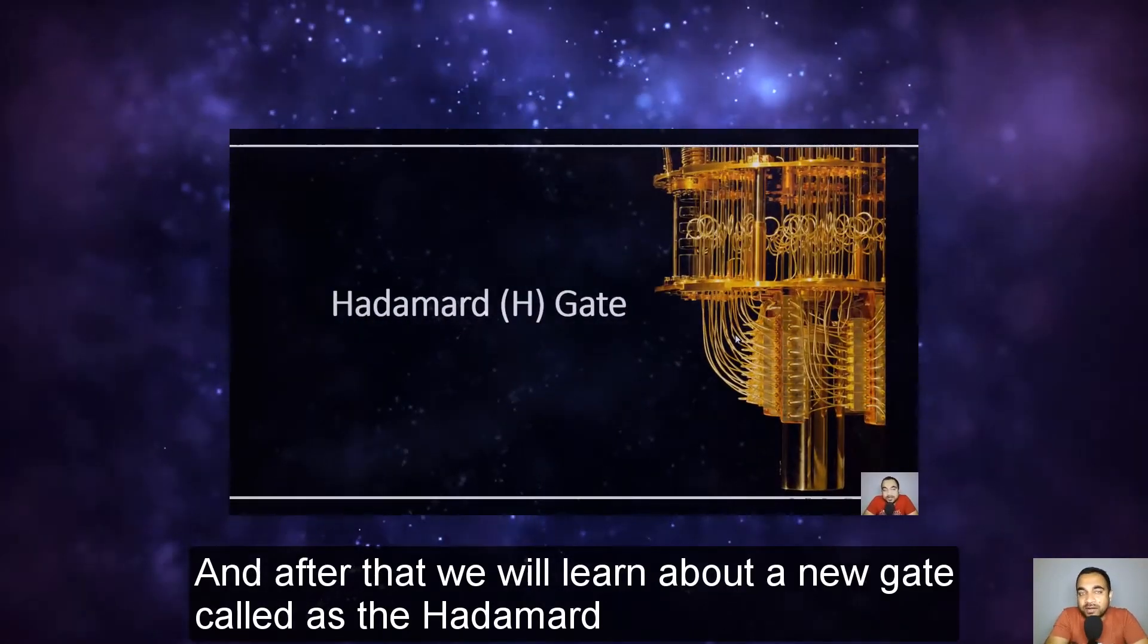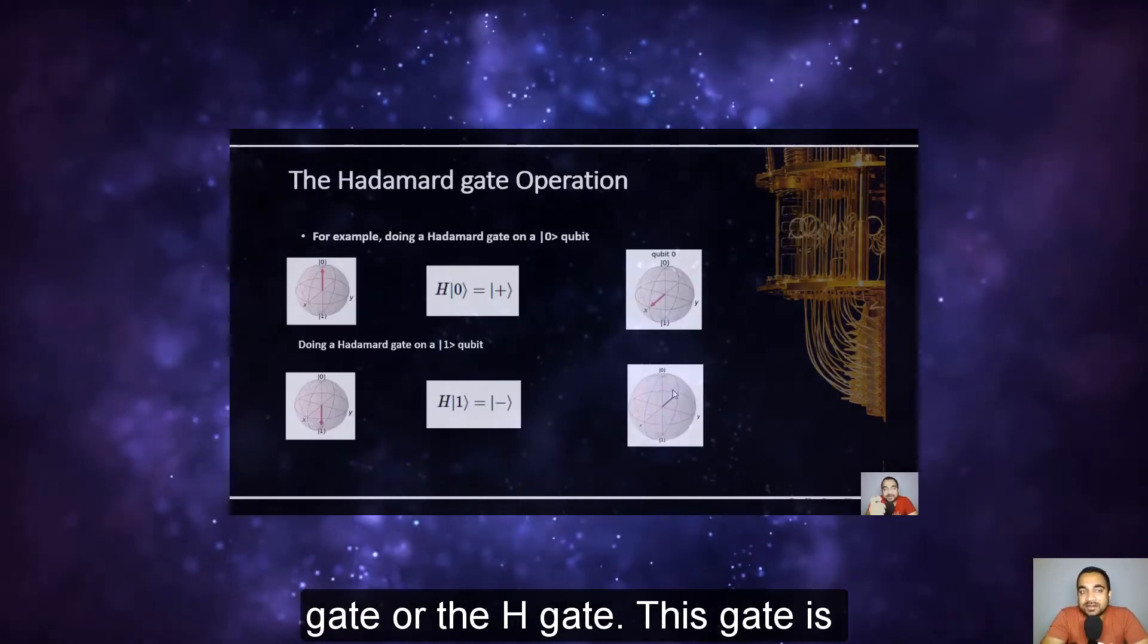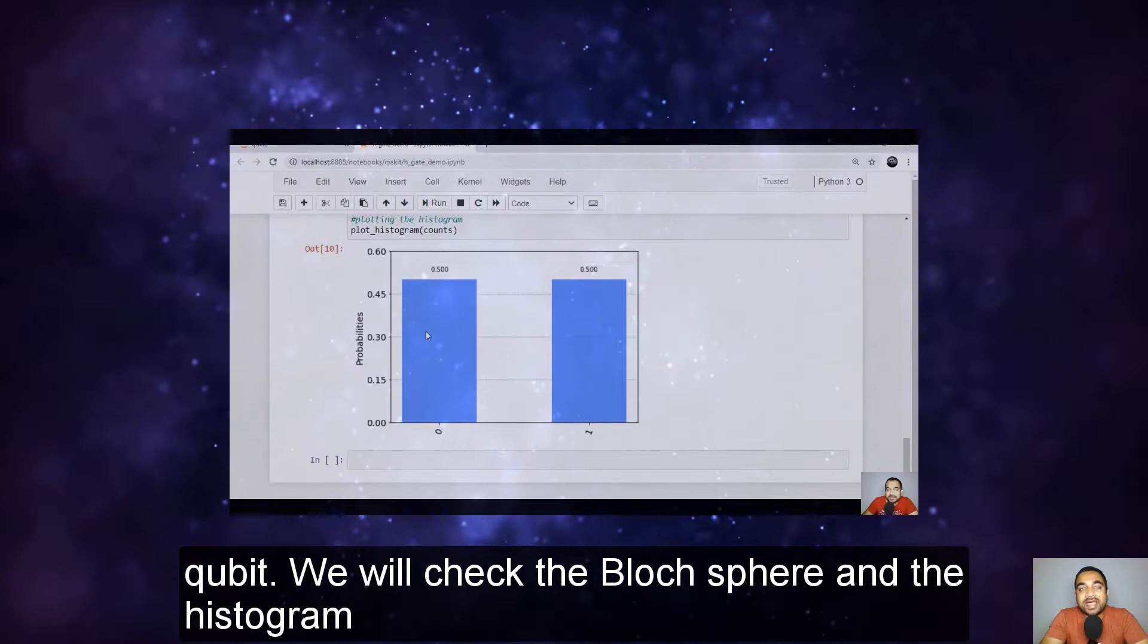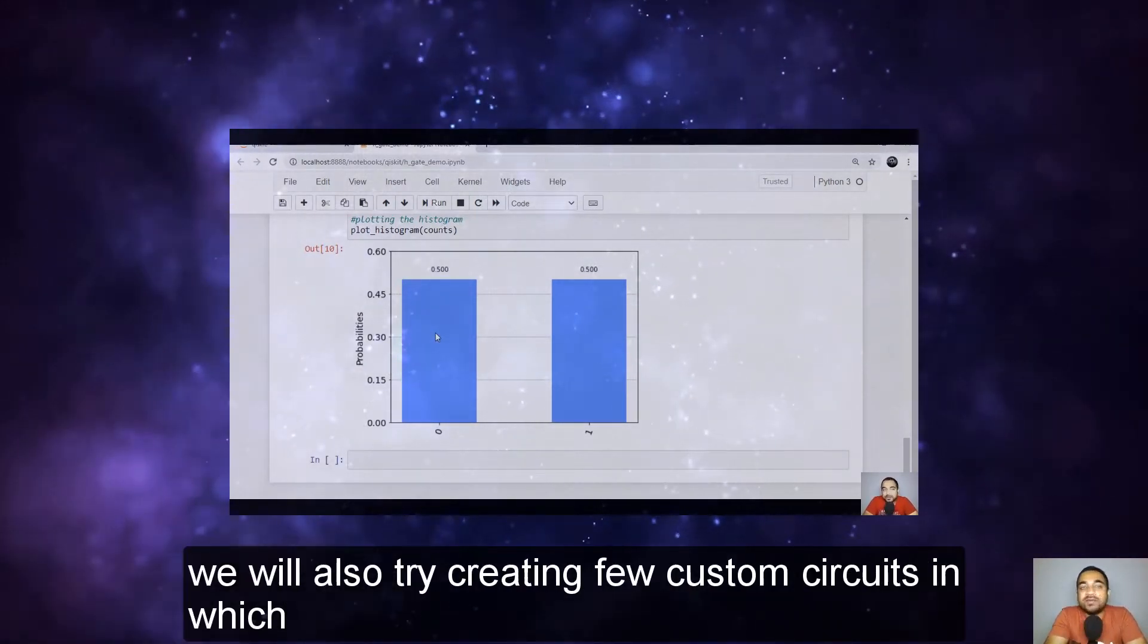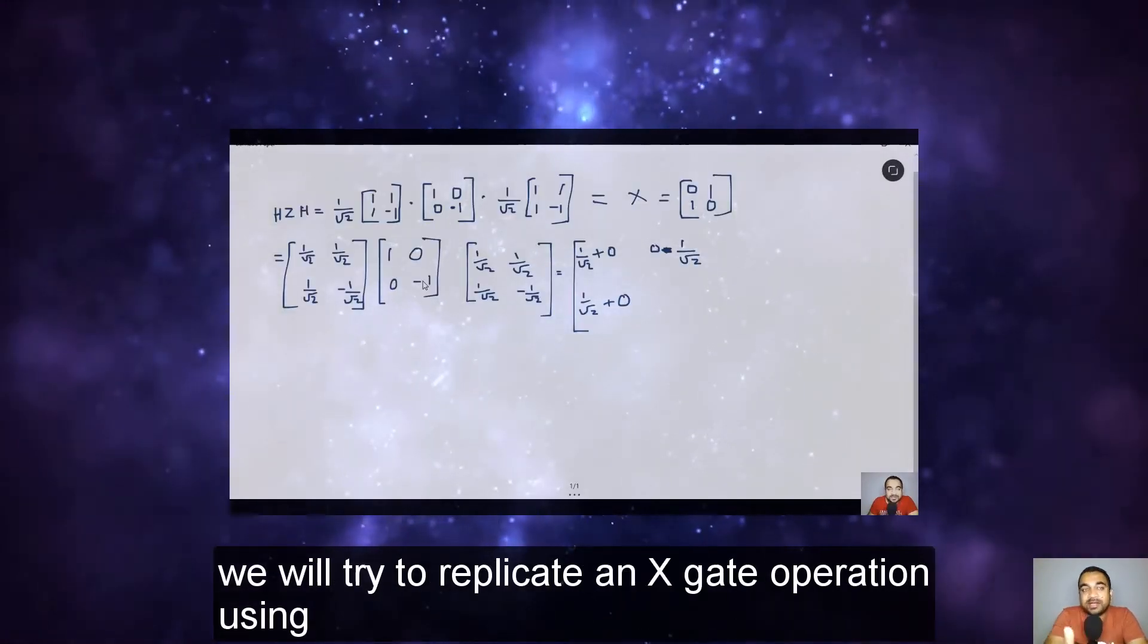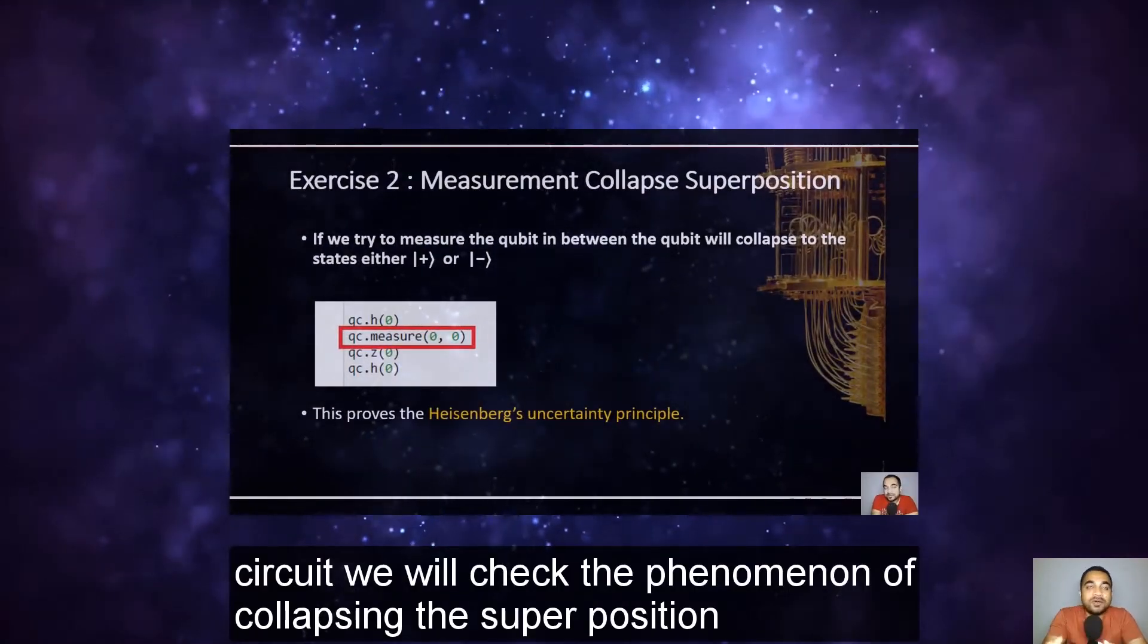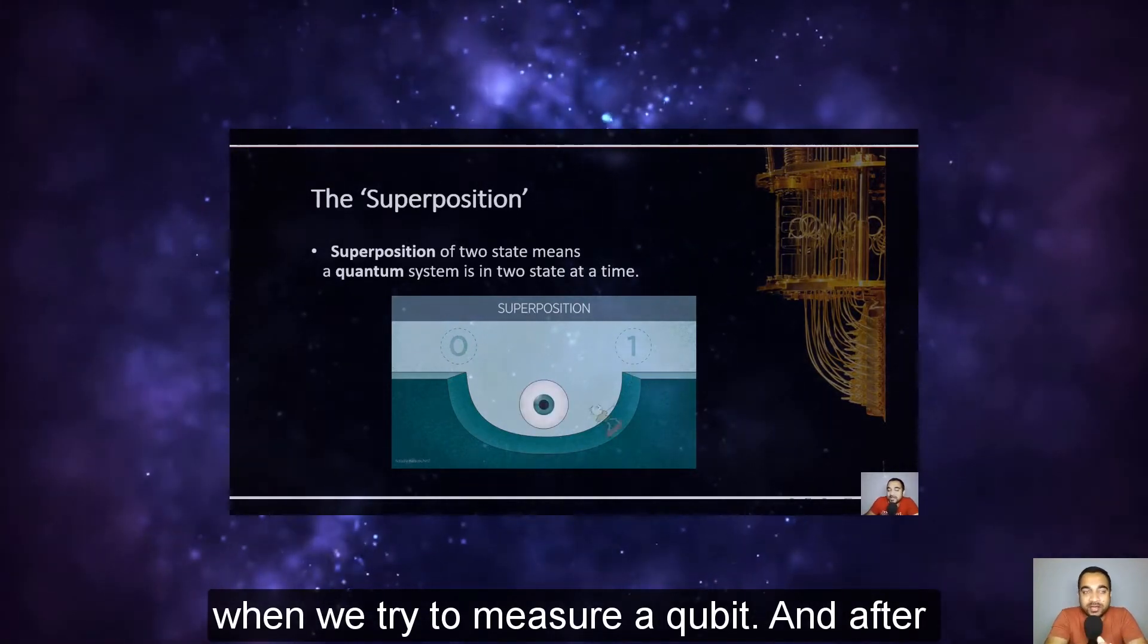And after that we will learn about a new gate called the Hadamard gate or the H gate. This gate is capable of generating superposition from a classical qubit. We will check the Bloch sphere and the histogram representation of the output using our Qiskit. Using H gate, we will also try creating few custom circuits in which we will try to replicate an X gate operation using only the H and Z gate. And in the next circuit we will check the phenomenon of collapsing the superposition when we try to measure a qubit.